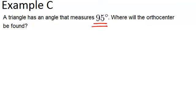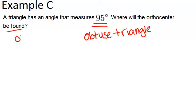So if one angle is 95 degrees, no matter what the other angles are, it means it must be an obtuse triangle. And in obtuse triangles, the orthocenter is always found outside of the triangle.